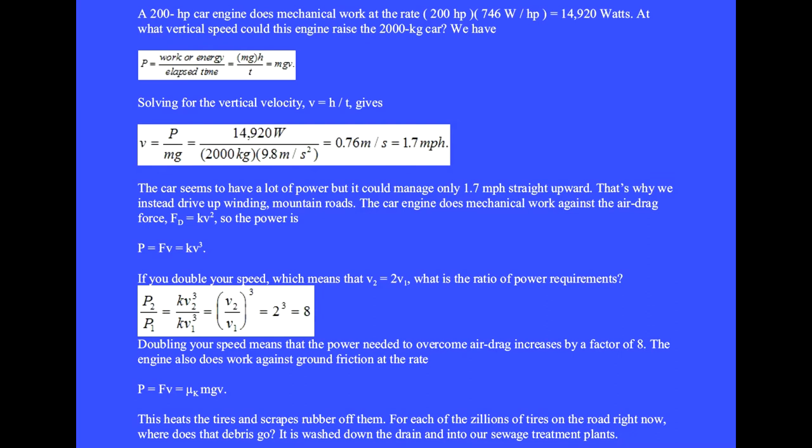If you double your speed, which means that V2 equals 2V1, what is the ratio of power requirements? We form P2 over P1 equals KV2 cubed over KV1 cubed. We cancel the K. We write this as V2 over V1 cubed. But V2 over V1 is 2, which we cubed to get 8. Doubling your speed means that the power needed to overcome air drag increases by a factor of 8.